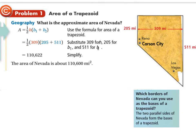Divided by two, that becomes the average of them — like taking this chunk and cutting it off here and filling it in there. Then all you have to do is simply calculate it, and it calculates out to be about 110,600 square miles. So that's how you do that.